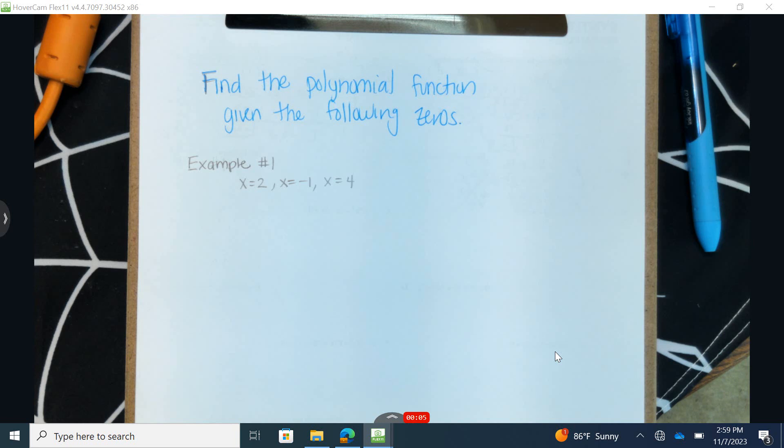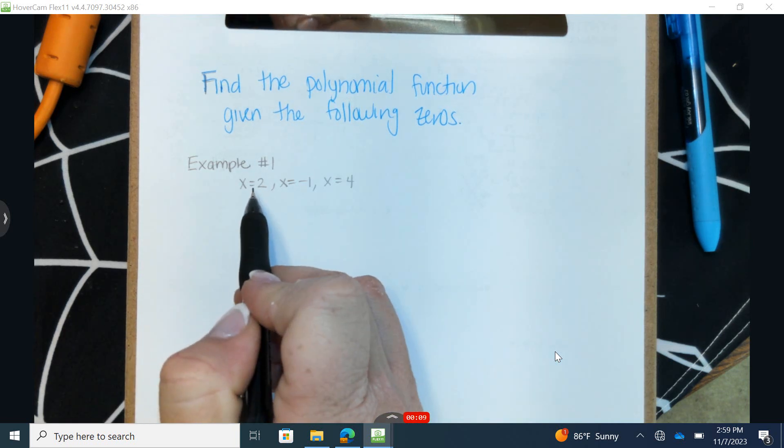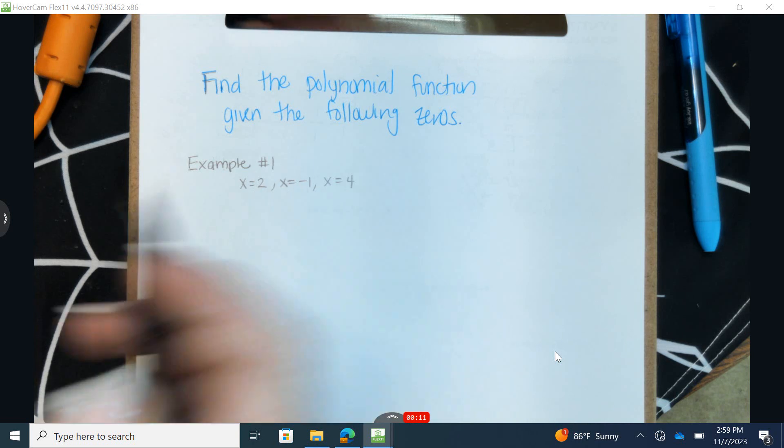Find the polynomial function given the following zeros. So for example 1, we're provided that the zeros are 2, negative 1, and 4.